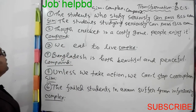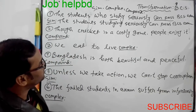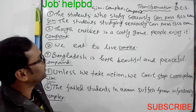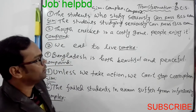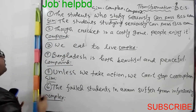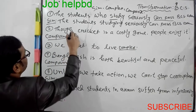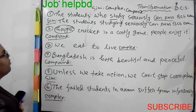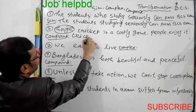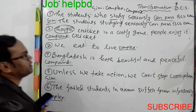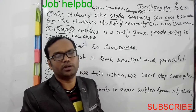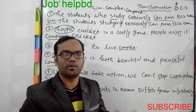Number 2: 'Cricket is a costly game; people enjoy it.' When two clauses are joined, the compound sentence will be made. The compound sentence is formed by joining two independent clauses.